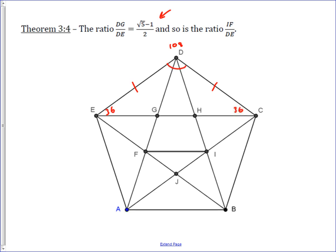The same argument can be made throughout the entire pentagon — all these angles are 36°. And not only are those angles 36°, but all these other angles are also 36°, because that's what it takes to add up to 108°. So we start off with all these 36° angles, and for the same reason we get that this angle is 108°, this angle is 108°, this angle is 108°, and this angle is 108°.